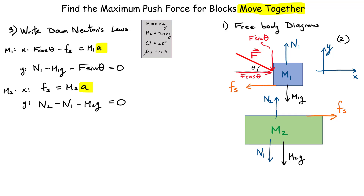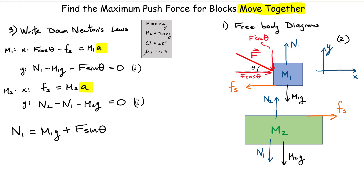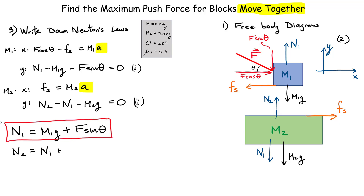Our goal is to find the applied force F, which appears in the first equation. First, let's look at the vertical equations. From M1's vertical equation we can solve for N1: N1 equals M1g plus F sine θ. We'll box that equation because we'll need it when talking about friction, since friction depends on the normal force. From M2's vertical equation we can also solve for N2 in terms of N1 plus M2g.